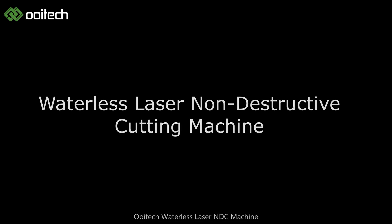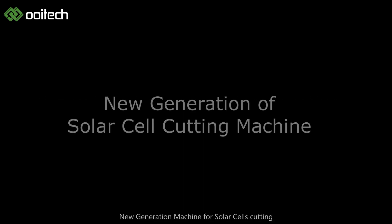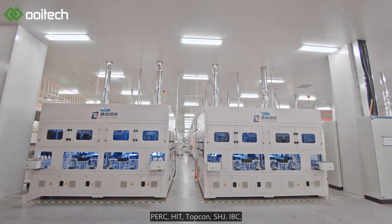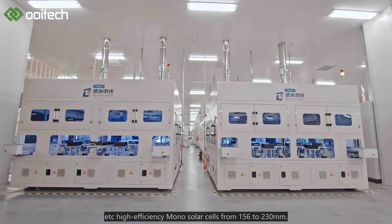The Oeditech Waterless Laser NDC Machine is a new generation machine for solar cell cutting, used to cut half, one-third, and even up to one-seventh of PERC, HIT, TOPCON, SHJ, IBC, and other high-efficiency mono solar cells from 156 to 230mm.